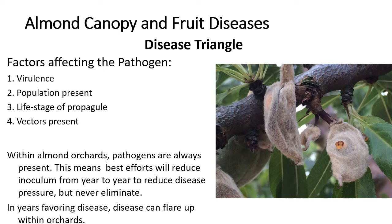This means that in years which favor disease, flare-ups can occur within an orchard. This is especially true with foliar diseases such as rust or alternaria, which can rarely occur in dry years but can flare up in wet springs.